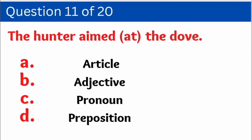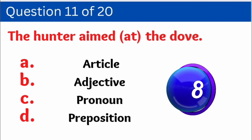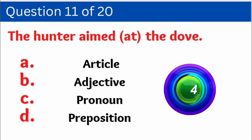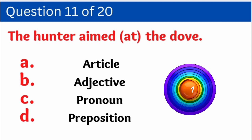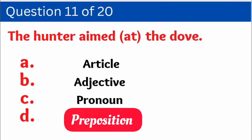Question number eleven: 'The hunter aimed at the doe.' We have to identify how 'at' is used. Options are: A. Article, B. Adjective, C. Pronoun, D. Preposition. And the correct answer is option D — Preposition.